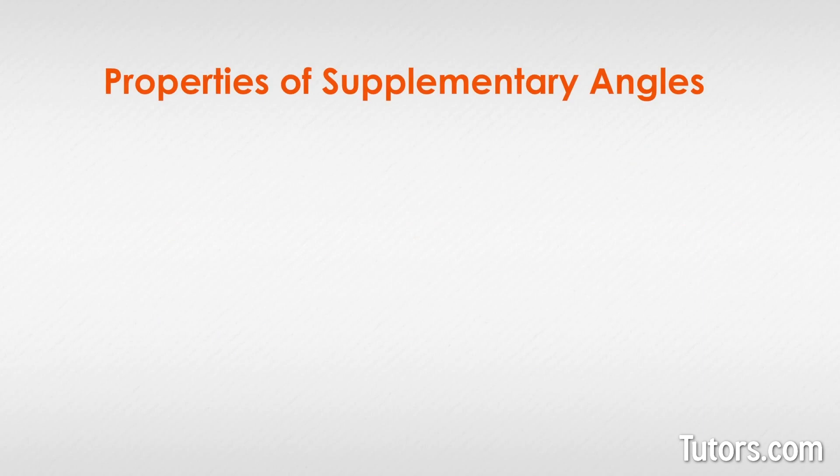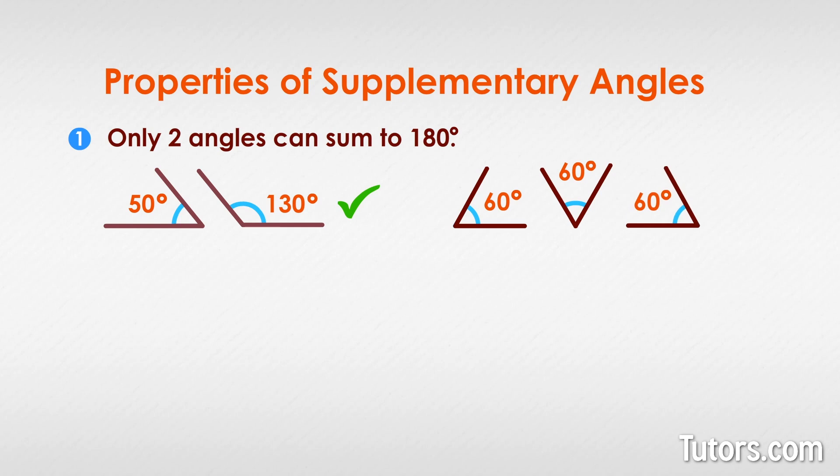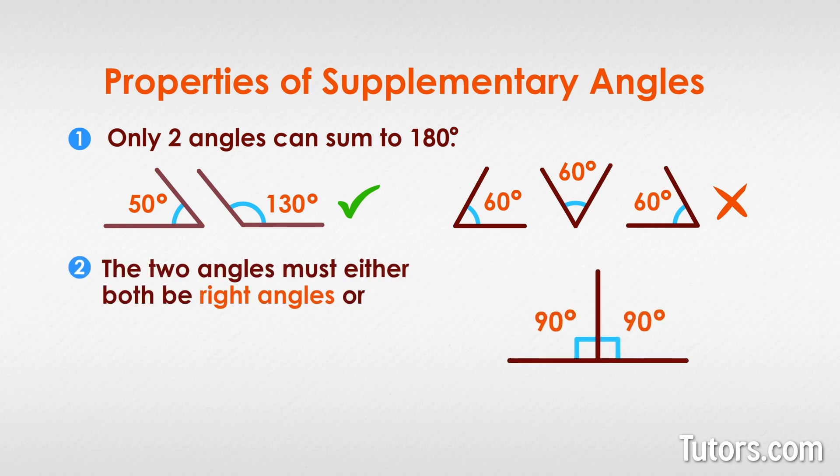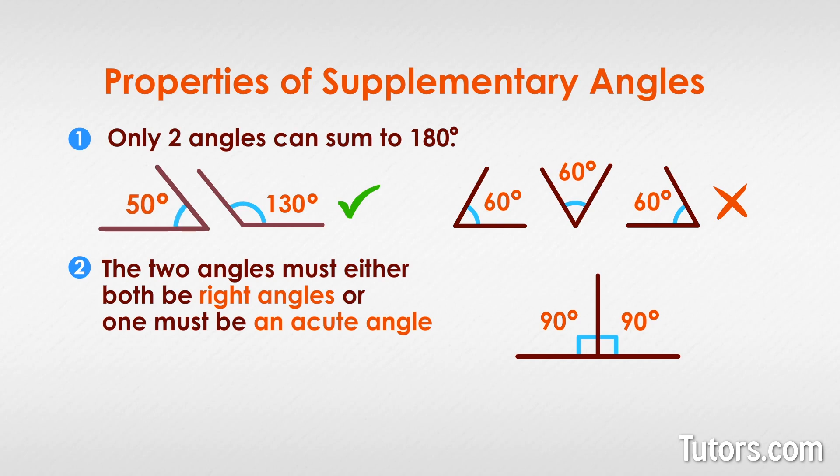Let's look at the properties of supplementary angles. Supplementary angles have two properties. Only two angles can sum to 180 degrees. Three or more angles may sum to 180 degrees or pi radians but they are not considered supplementary. The two angles must either be right angles or one must be an acute angle and the other an obtuse angle.